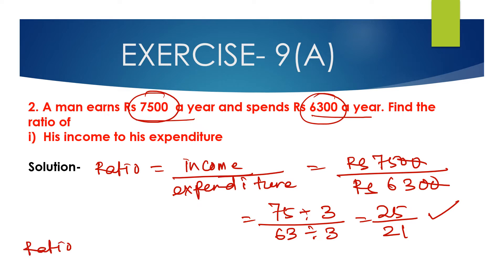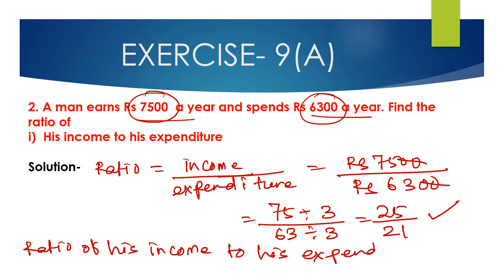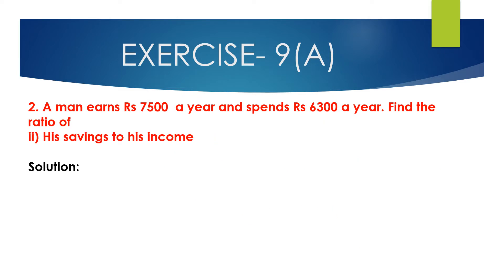The ratio of his income to his expenditure is 25 is to 21. That is the answer. Now we will solve question number 2, second part.